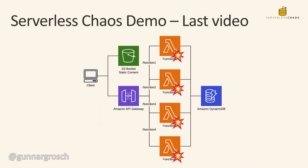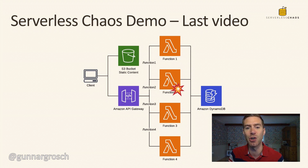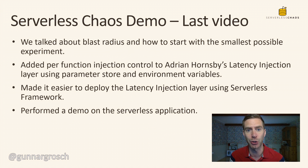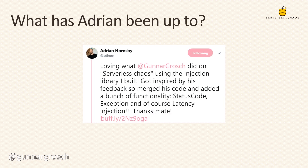In the last video we talked about blast radius containment — how to perform our experiments in a controlled fashion so that we don't create an outage of the entire application, and only inject failure into the function or part of the application where we want to inject it. We also made it possible to do that using Adrian Hornsby's latency injection layer by adding per-function control, using parameter store and environment variables, and we deployed it using the serverless framework.